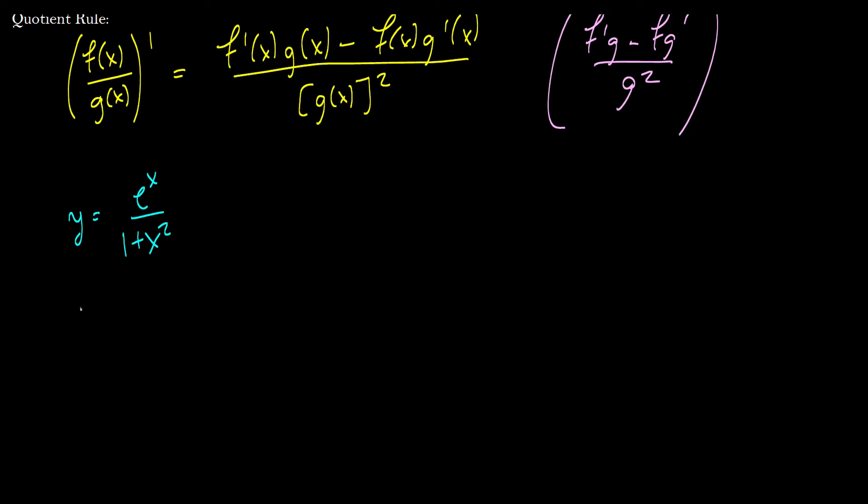So y prime is equal to f prime of x, which we know is the derivative of e to the x, which is itself e to the x, times g of x, which is 1 plus x squared, minus f of x, which is e to the x, times g prime of x. Well, the derivative of 1 plus x squared is 2x all over the bottom squared. So 1 plus x squared, all squared.